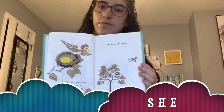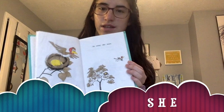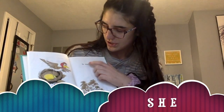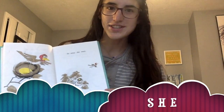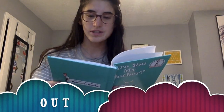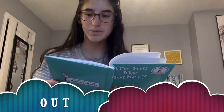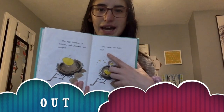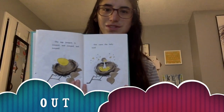I must get something for my baby bird to eat, she said. I will be back. So away she went. This sight word is she — S-H-E. The egg jumped. It jumped and jumped and out came the baby bird. This one is out — O-U-T.